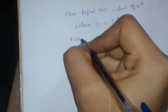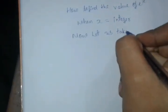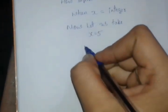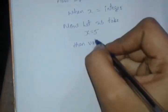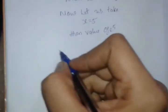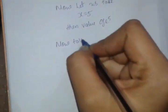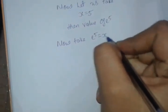Now let us take x equals 5. Then you must find the value of e power 5. Now take e power 5 is equal to some x value.